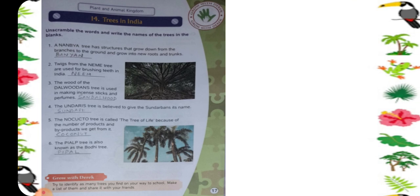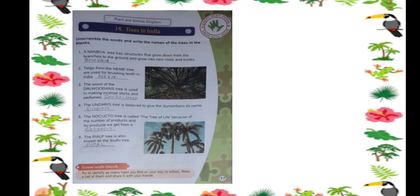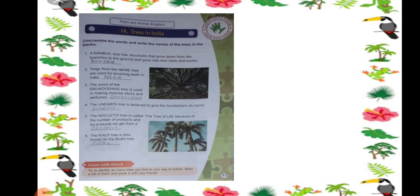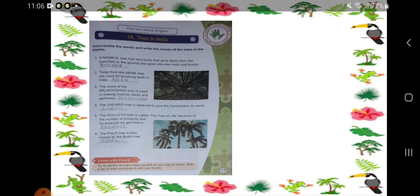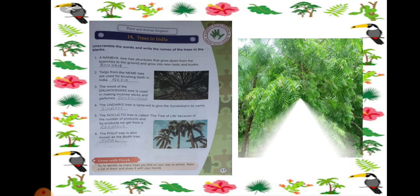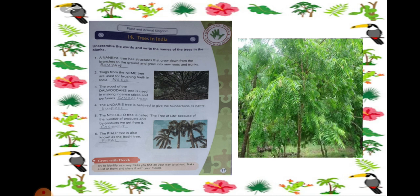Number 2. Twigs from the tree are used for brushing teeth in India. That is neem tree. It has lots of medicinal properties. So look here, this is a neem tree. You can see the neem tree out here. The banyan tree picture is already there in your book. That is a banyan tree and this is the neem tree.